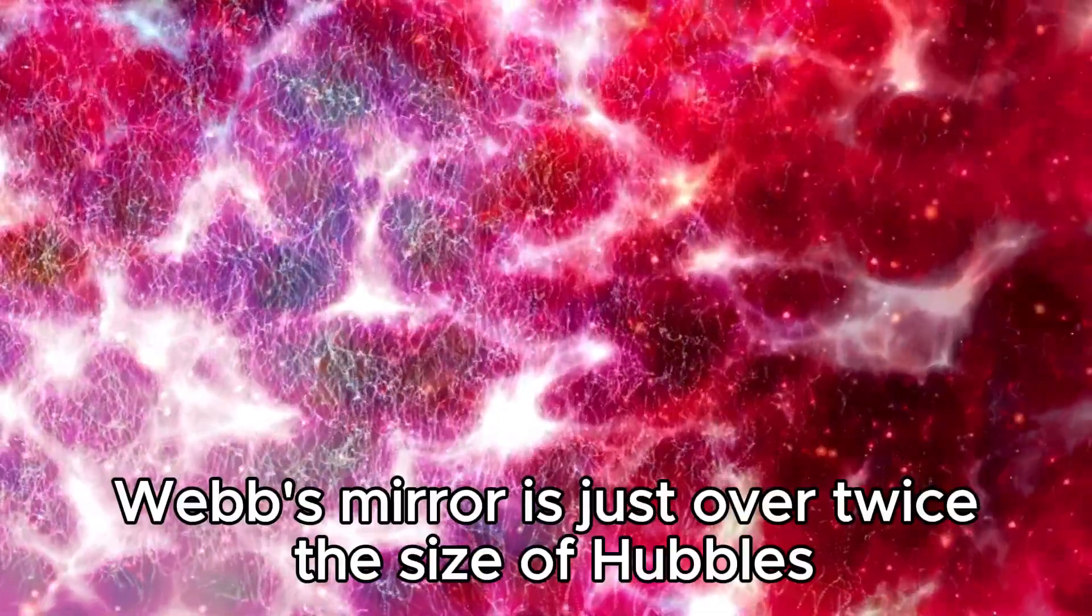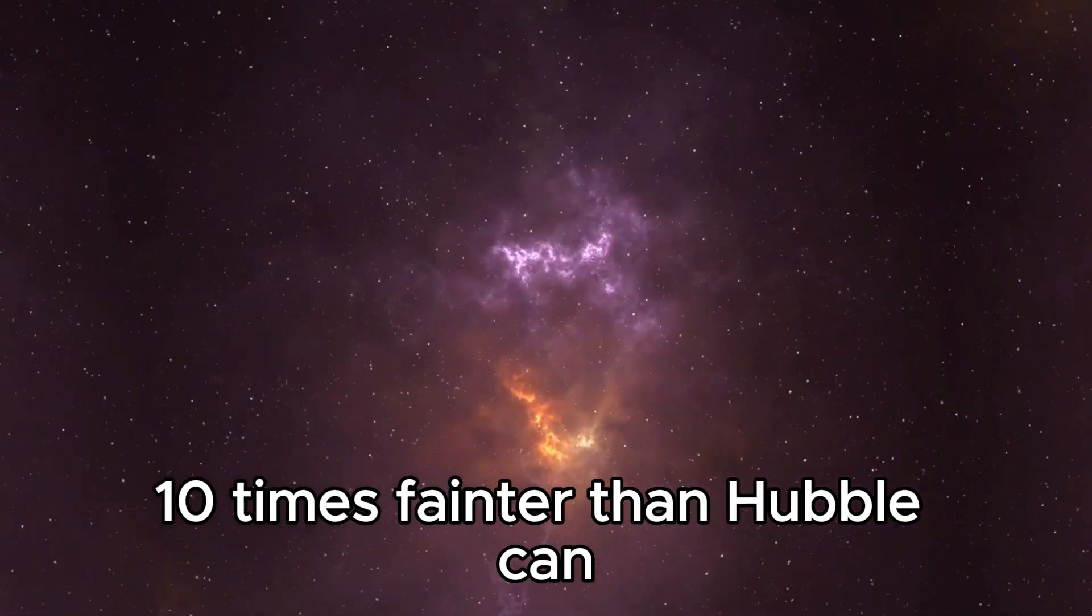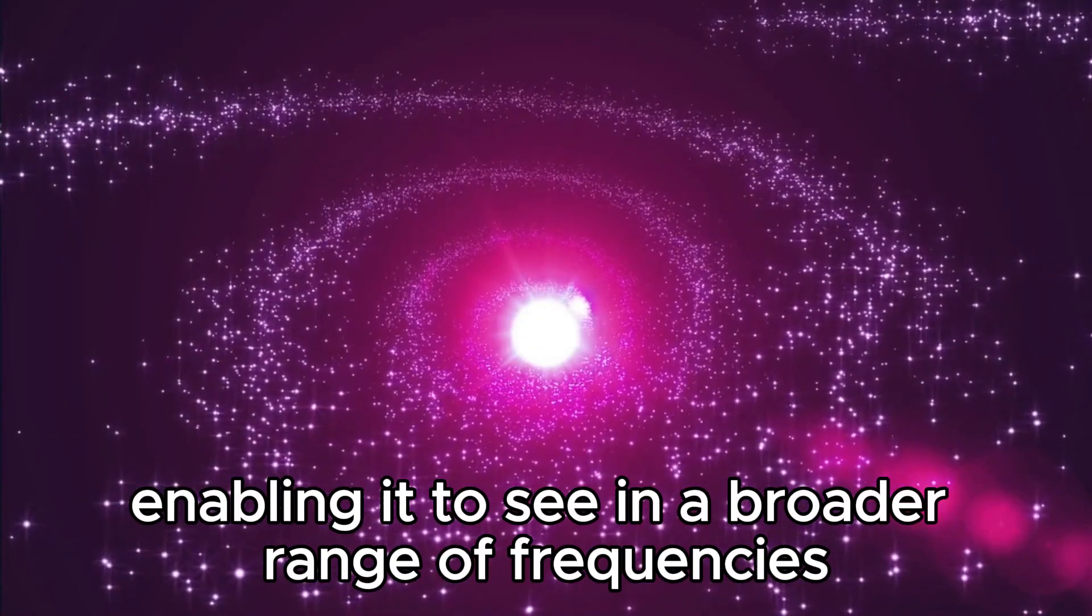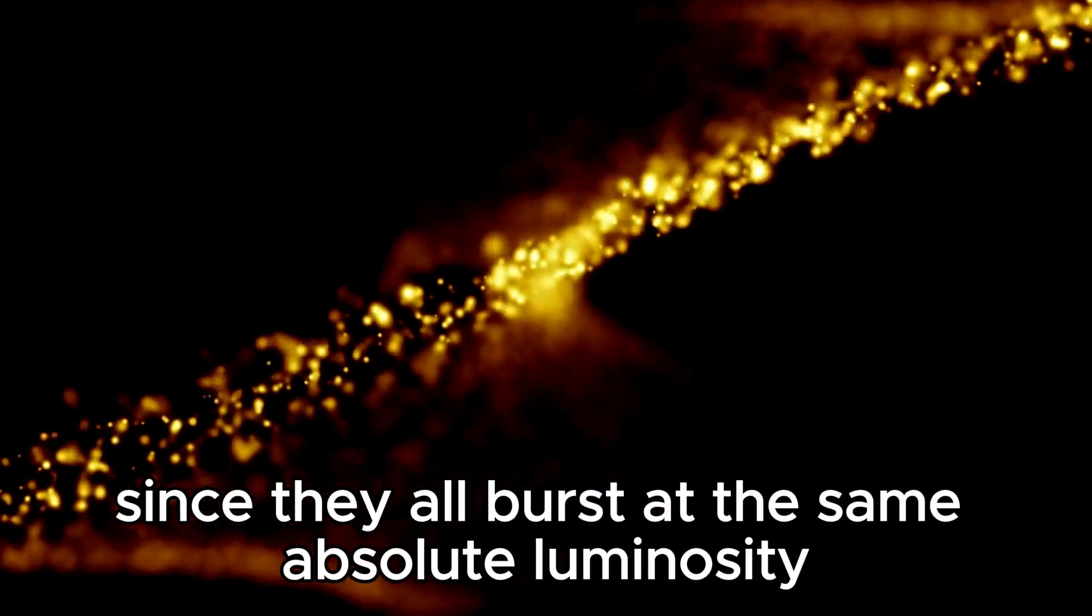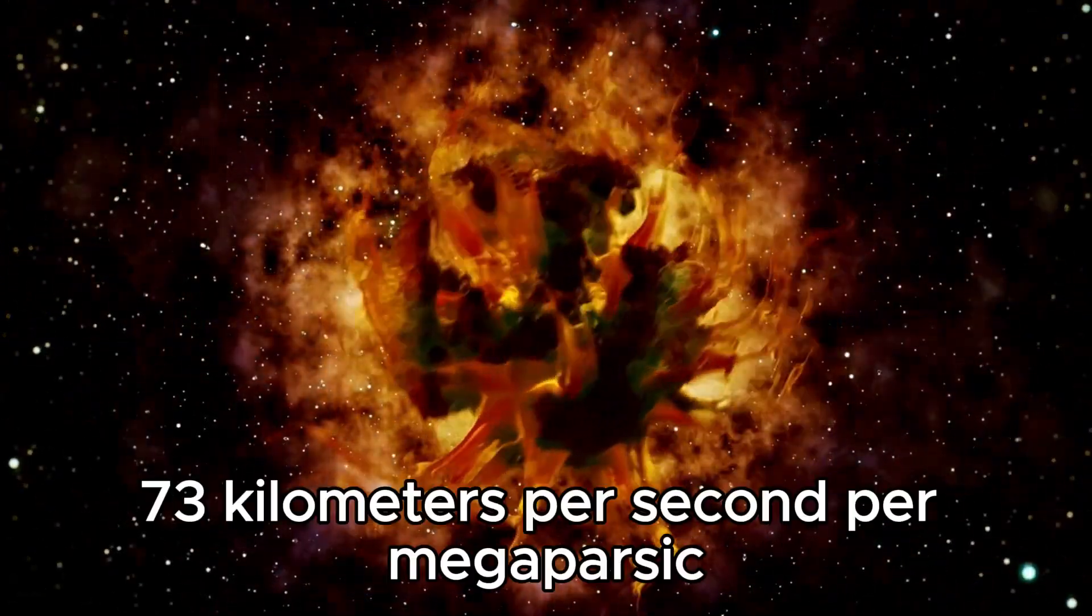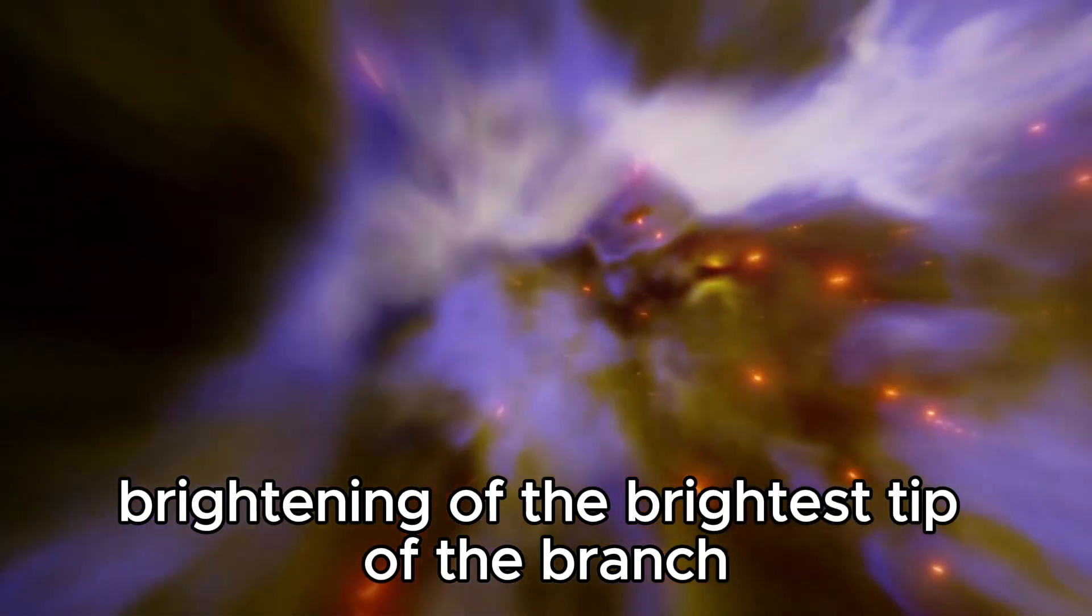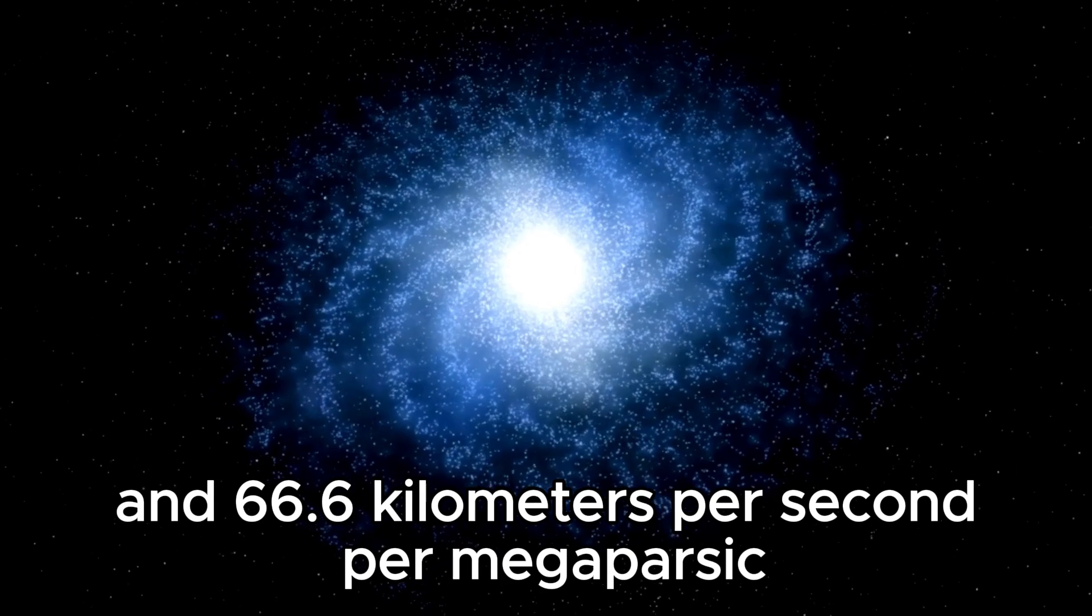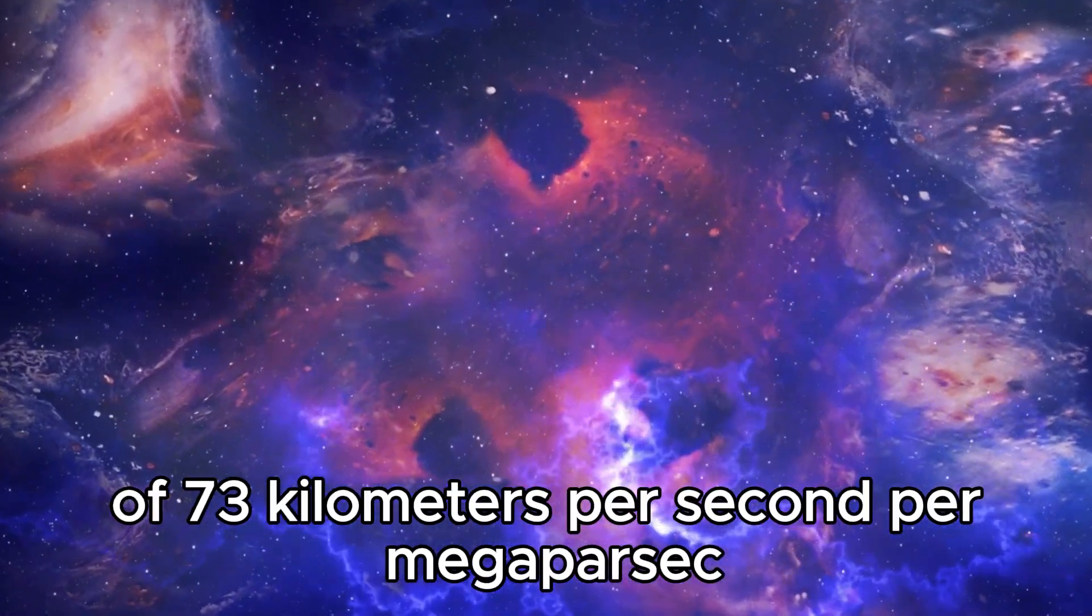At 6.5 meters, Webb's mirror is just over twice the size of Hubble's, which is just 2.4 meters wide. Not only can James Webb detect objects 10 times fainter than Hubble can, but it is also much more sensitive in the infrared range, enabling it to see in a broader range of frequencies. By comparing stars measured by James Webb in the galaxy NGC 4258 with type IIA supernovae, another standard candle since they all burst at the same absolute luminosity in distant galaxies, Rees and his colleagues arrived at an almost identical result: 73 kilometers per second per megaparsec. Other measurements, including one made by Fredman with the Hubble Space Telescope on the fast brightening of the brightest tip of the branch red giant stars and another with light bent by the gravity of massive galaxies, returned with specific results of 69.6 and 66.6 kilometers per second per megaparsec. A separate result using the bending of light also gave a value of 73 kilometers per second per megaparsec.